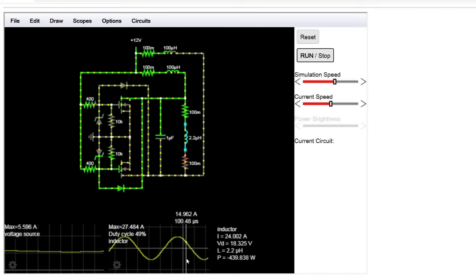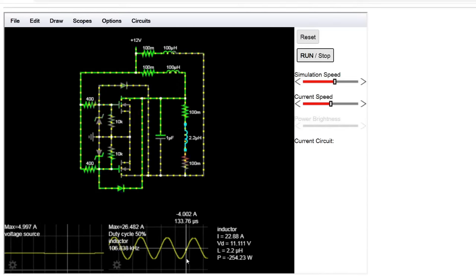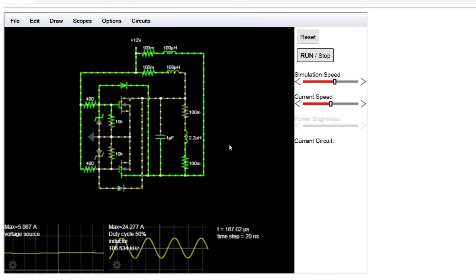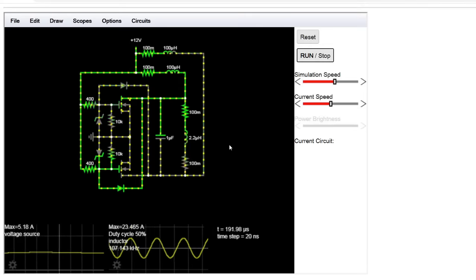Notice that the power supply current spikes a little bit, but afterward is relatively steady even though there's a very large oscillation across the inductive load.